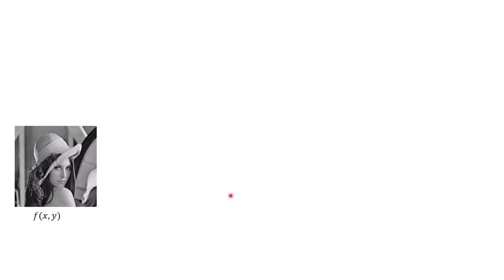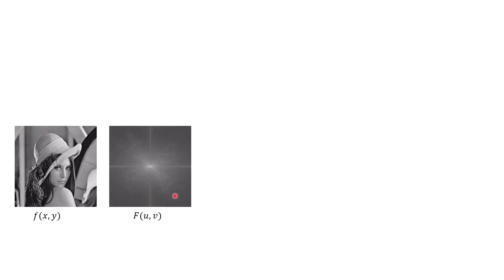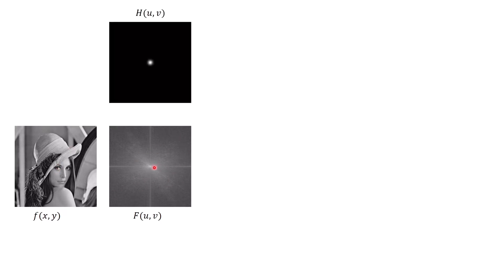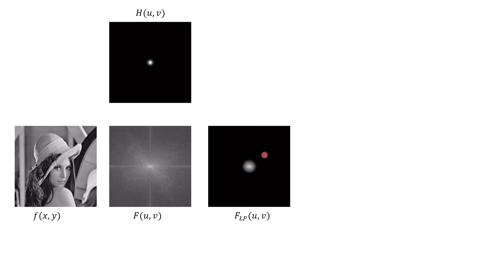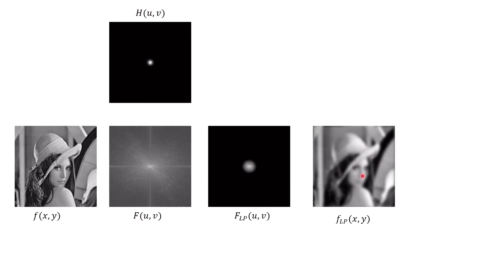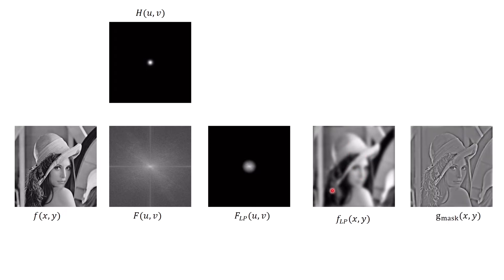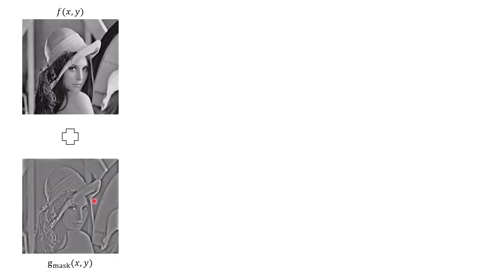Here I illustrate the unsharp masking and high-boost filtering process. I have the original input image f, and then I transform this image into the frequency domain. Next I apply a Gaussian low-pass filter, then take the inverse Fourier transform to get the blur image. By subtracting the blur image from the original image I get the mask.